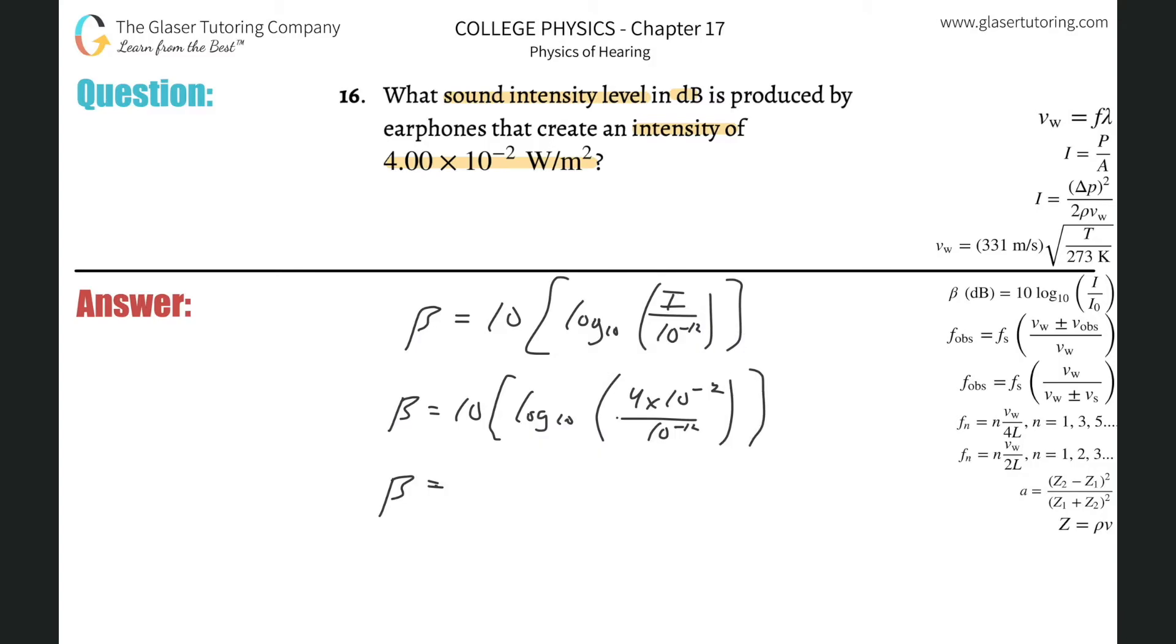Don't worry about the base 10 there. When you calculate this, assuming your calculator has a log button, it's assumed that the base is 10. So if you just hit the log button and then you do 4 times 10 to the minus 2 divided by 10 raised to the minus 12 and then enter that...